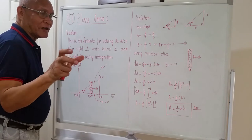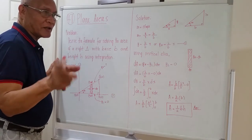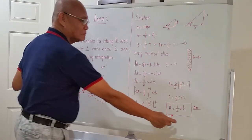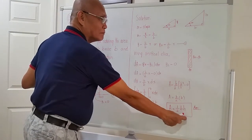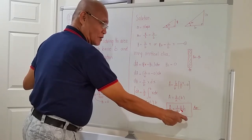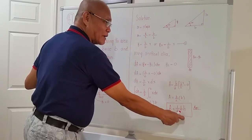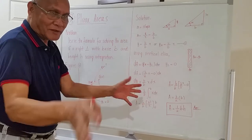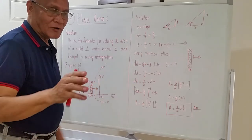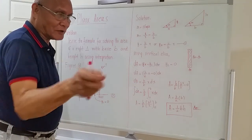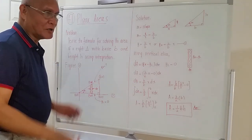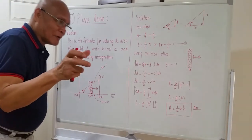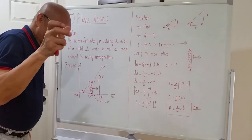We know that the area of the right triangle is one-half bh. But this one-half bh which we are using under lower mathematics was actually derived from integral calculus. Let's proceed with the solution.